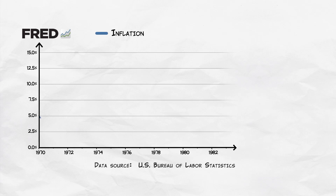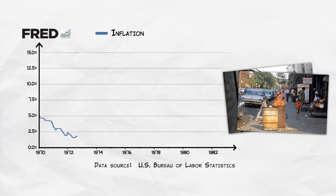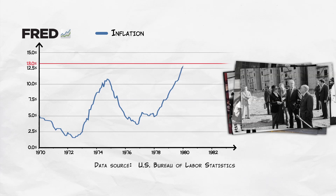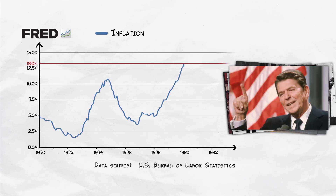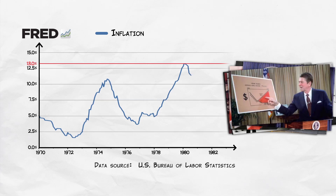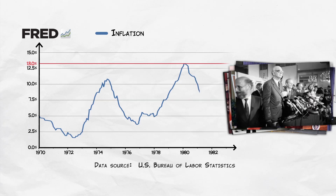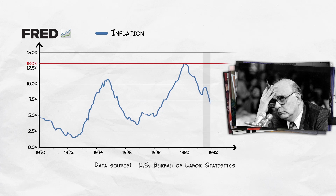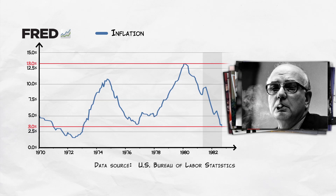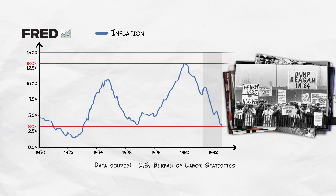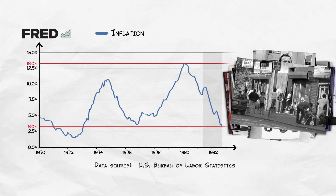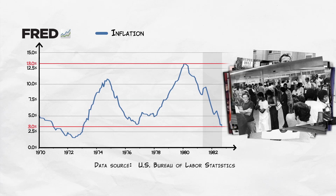Many economists think that the Federal Reserve did overstimulate the economy in the 1970s. By the end of the 1970s, inflation was running away at over 13% a year. Ronald Reagan was elected to the presidency in 1980 in part to change economic policy. By 1983, the Federal Reserve, under cigar-chomping chairman Paul Volcker, had brought inflation down to 3%, but at the price of a very severe recession. So the cost of stimulating the economy in the 1970s was very likely even more unemployment in the early 1980s.